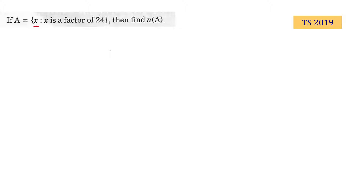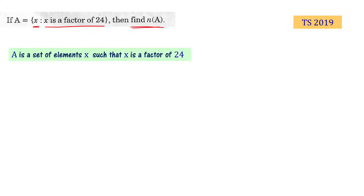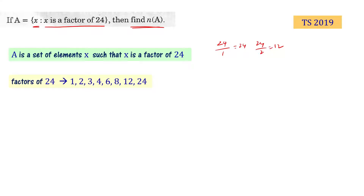If A is a set of elements x such that x is a factor of the number 24, find the number of elements of A. A is a set of elements that are factors of 24. What are the factors of 24? They are 1, 2, 3, 4, 6, 8, 12, and 24. For example, 24 divided by 8 is 3, and 24 divided by 6 is 4.